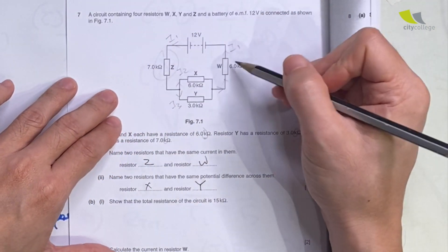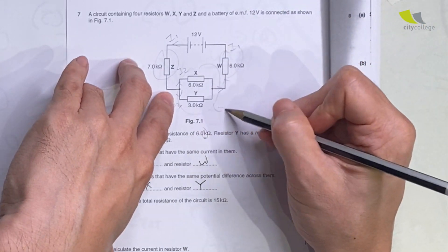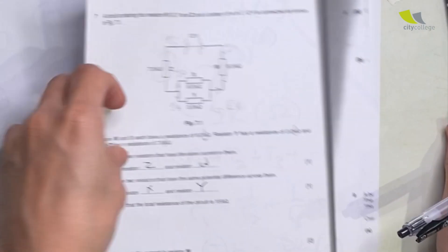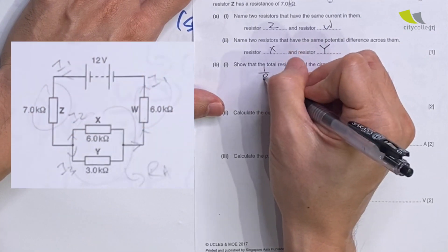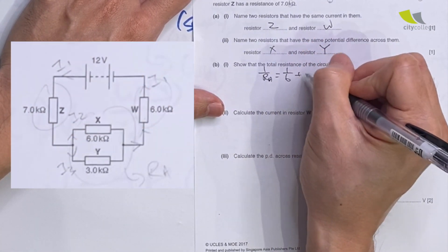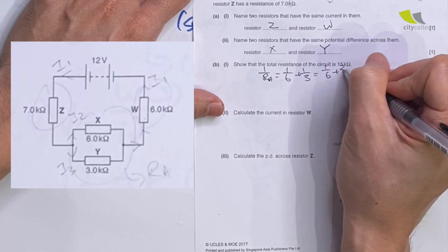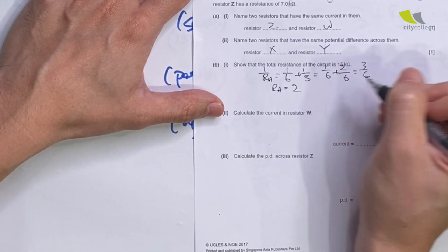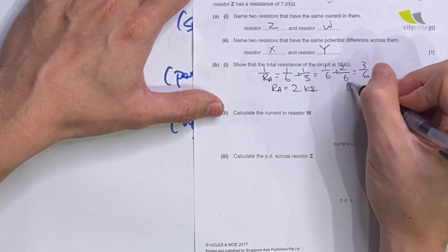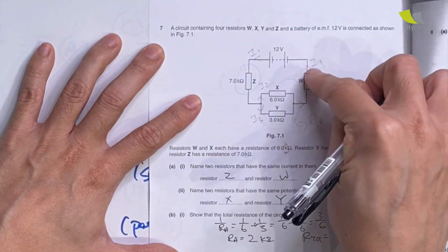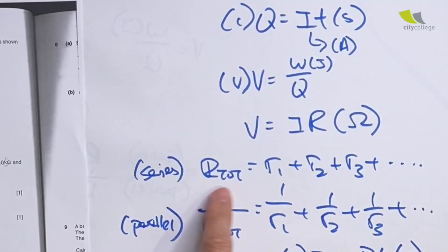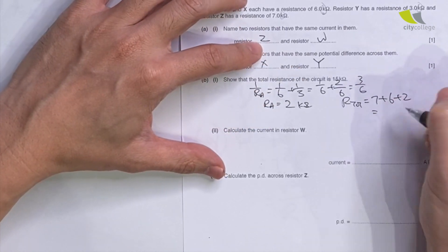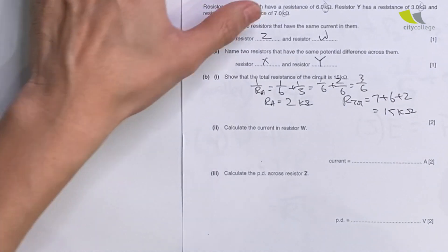To show that the total resistance is 15 kilo-ohms, we split into groups. Let's call Ra the group of X and Y connected in parallel. So 1/Ra = 1/6 + 1/3 = 1/6 + 2/6 = 3/6, giving Ra = 2 kilo-ohms. Then R_total = 7 + 6 + 2 (all three in series), which gives us 15 kilo-ohms. That's how you get the 2-mark answer.